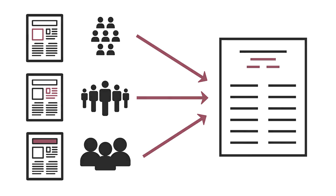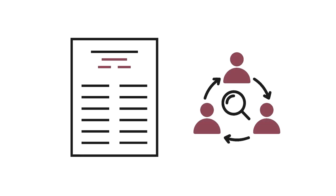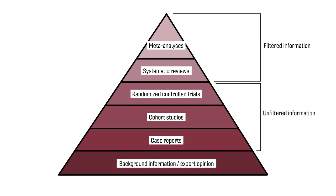Finally, a cornerstone of the systematic review is transparency and replicability. In other words, the review should be documented and reported with enough detail that another research team can accurately replicate the approach. Because of these characteristics, the systematic review and meta-analysis is considered the pinnacle of quality when it comes to evidence for decision making.